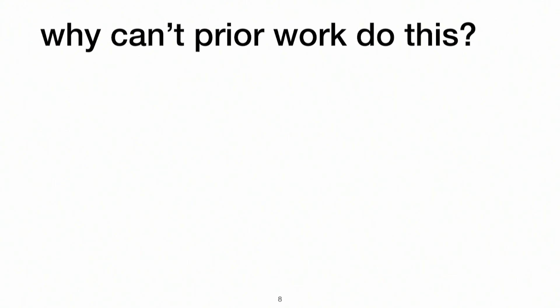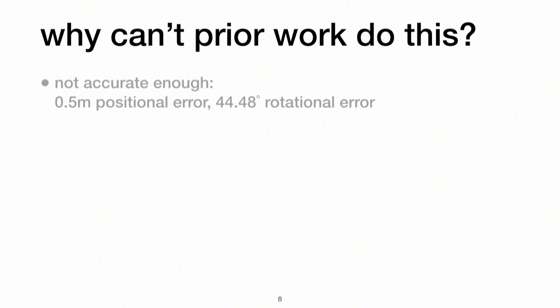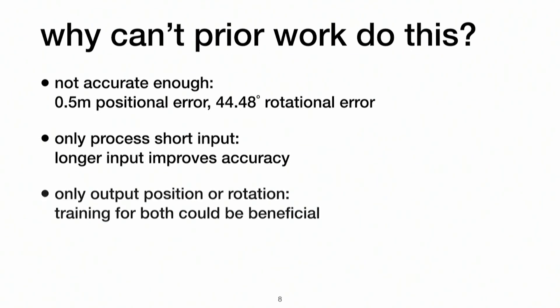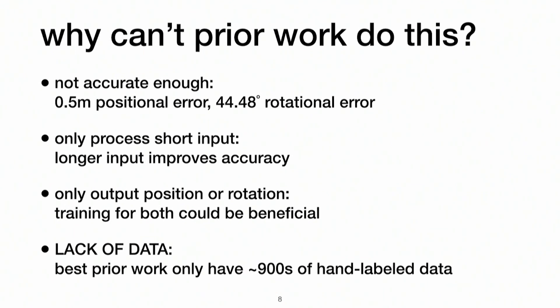This seems really simple — why doesn't prior work just do this? We went through a bunch of related works and their models are not accurate enough. The best model we found has 0.5 meters in positional error, and 44 degrees orientation error achieved with multiple microphone arrays, not even one. They only process short input, while their results show longer input yields better accuracy, but longer input also increases latency. Their models usually only output either position or rotation — a multi-task learning approach would be beneficial for both. The root cause is lack of data; the best prior work only has 900 seconds of hand-labeled data.